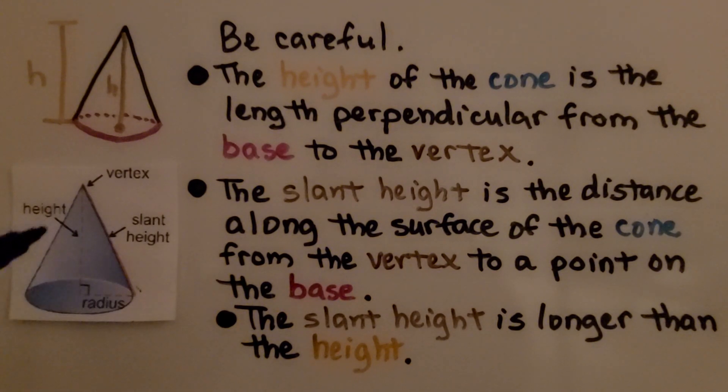If you look carefully, this looks like a right triangle. The height would be like the leg, and the slant height would be like the hypotenuse of the right triangle.